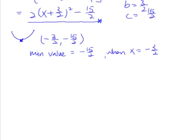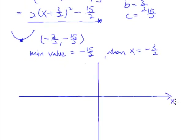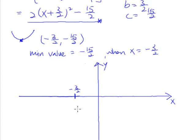So we draw the x and y axes. We know this is a minimum curve — it has to be a U-shaped, happy-face curve. We also know it has a minimum point at negative 3 over 2. So we mark a point where x is negative 3 over 2 and y is negative 15 over 2, which is somewhere below the x-axis. It's a sketch, so we don't have to be accurate to scale. We have one point already.